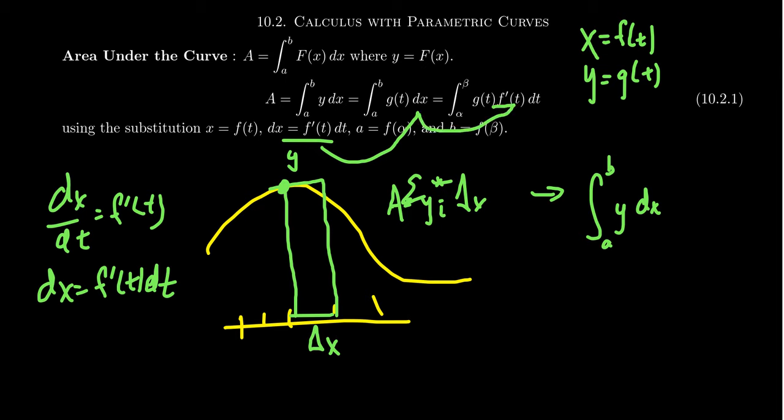We take the integral, the integral of g of t times f prime of t dt. But these were x coordinates before. We're going to have to change them to the parameters. And so we have to look for values, a parameter alpha, which produces x equals A. That will be inside the f function. And we have to look for a parameter beta, which when put into the x function will give us a B. And so we can integrate. We're just integrating y dx, just adapt y and x into the parametric setting. That's all we're doing.